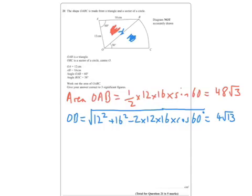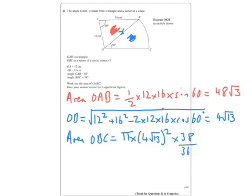Okay, again, I'm going to actually put it in my calculator, but that is the radius of that sector of circle. So now I'm going to go area of OBC equals pi times 4 root 13 squared times 38 over 360, which gives me 988 over 45 pi.